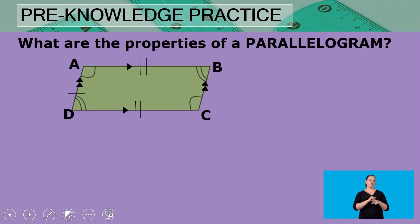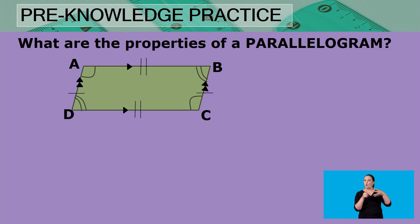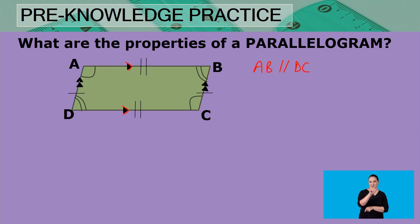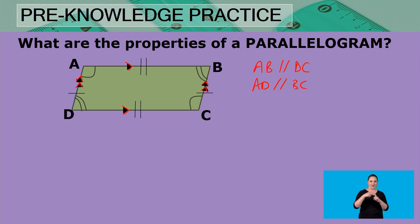Let's look at some practice where we are going to name the properties of a particular quadrilateral. What are the properties of a parallelogram? As we can see in the diagram, a parallelogram has opposite sides that are parallel — two pairs of opposite sides. We have AB parallel to DC, and AD parallel to BC. So that is one property: there are two pairs of sides that are parallel.